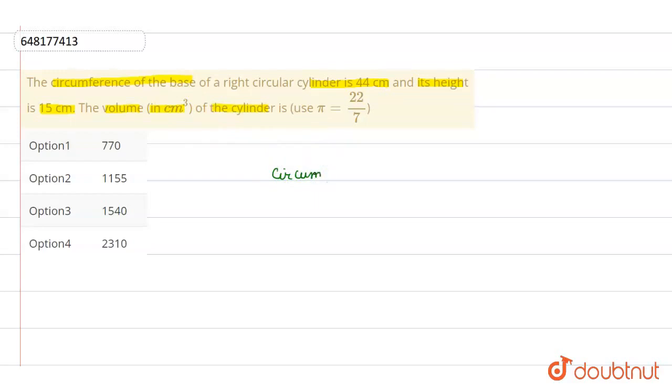What is the base of the cylinder? It is a circular shape. So the circumference of this circle is 44 cm.